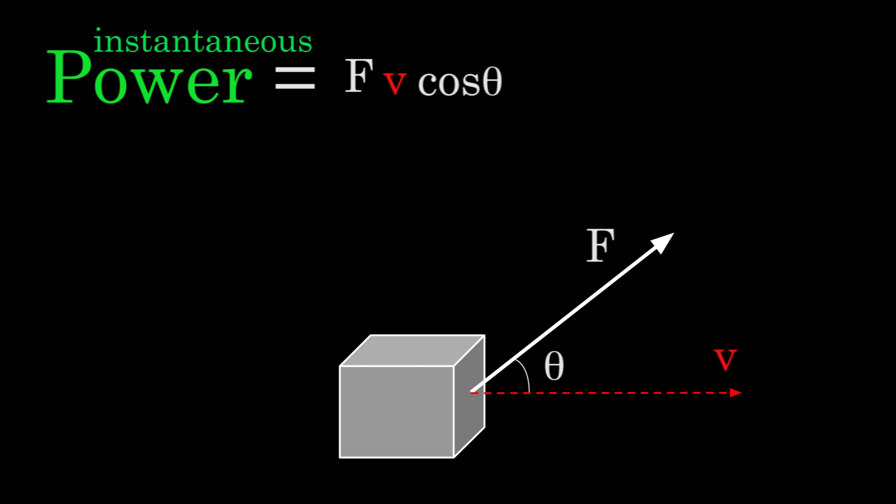But in many cases, the force is in the same direction as the velocity, which means the angle between the force and the velocity is zero. And since cosine of zero is one, you don't really need the cosine in the formula at all. And you find that the instantaneous power is just the force times the speed.